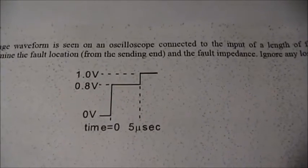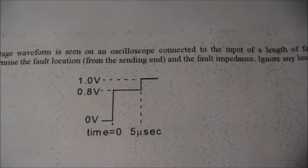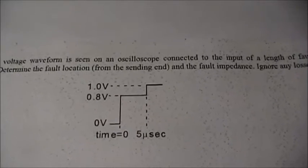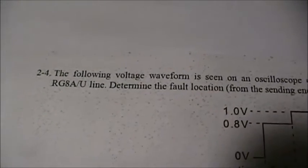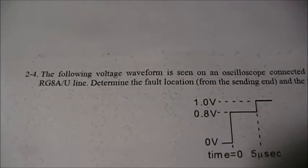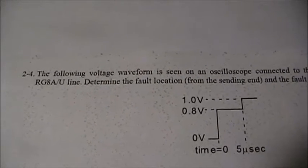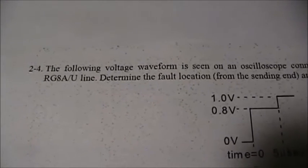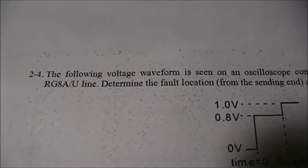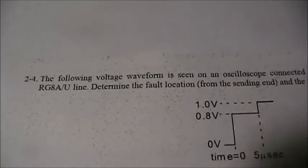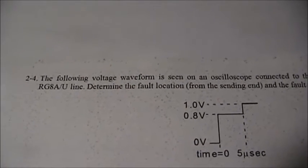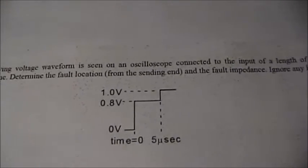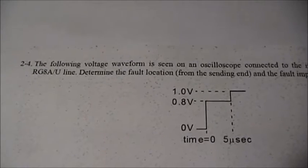This waveform we see here, we see a voltage going from 0.8 to 1 volts at 5 microseconds is at the input to a piece of RG8 cable. Now that RG8 cable is a 50 ohm cable. The velocity of propagation of that cable is 66% of the speed of light, which will make it 2 times 10 to the 8 meters per second. And we're going to ignore the losses of the coax.